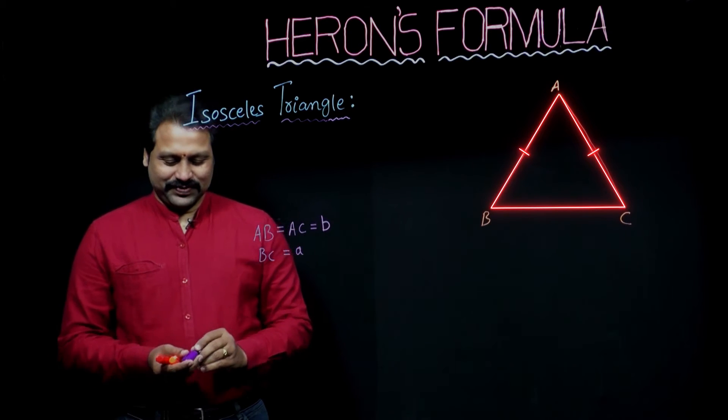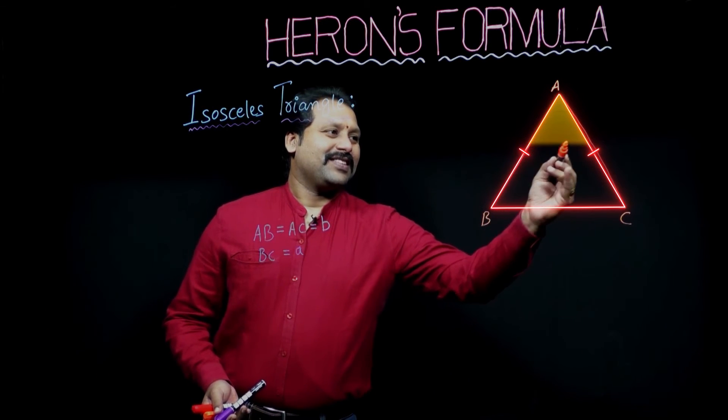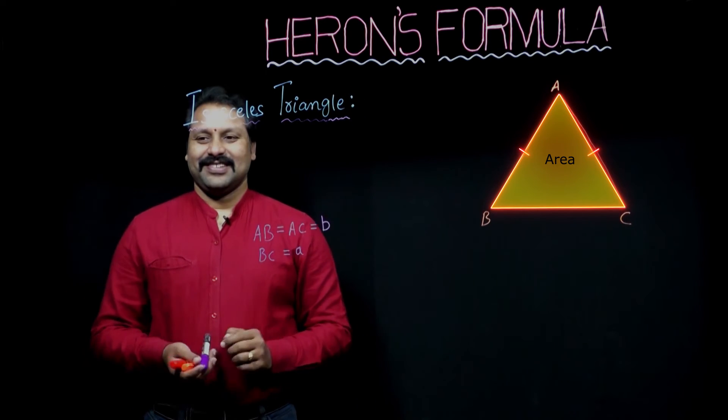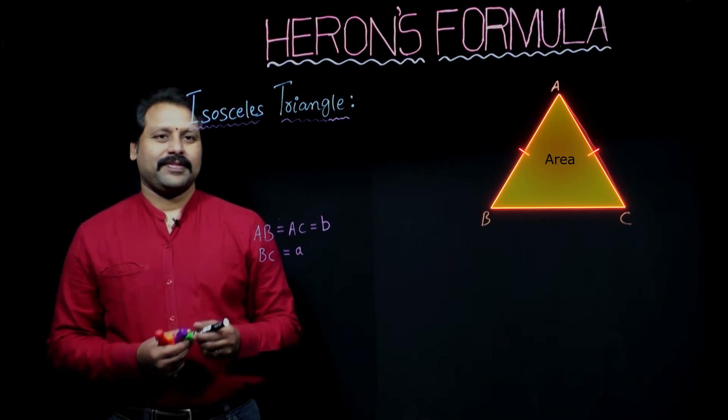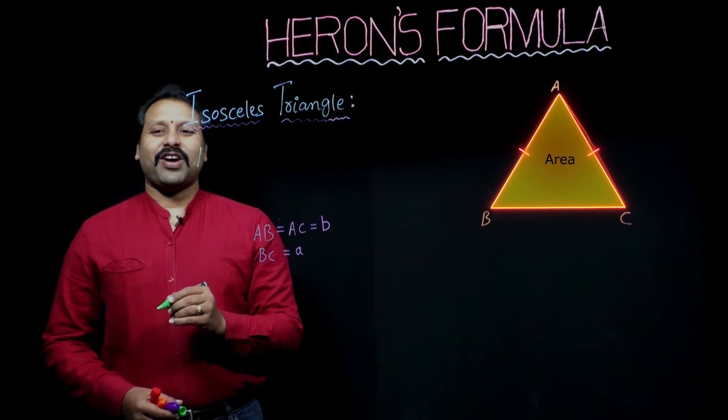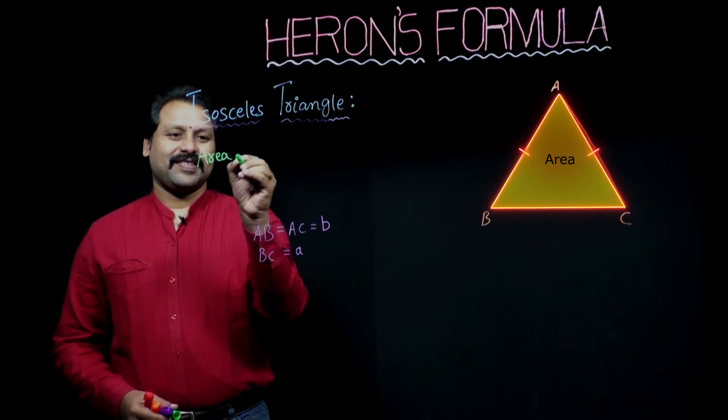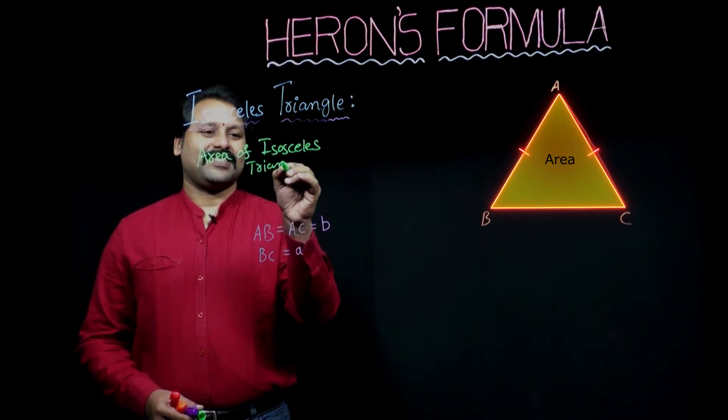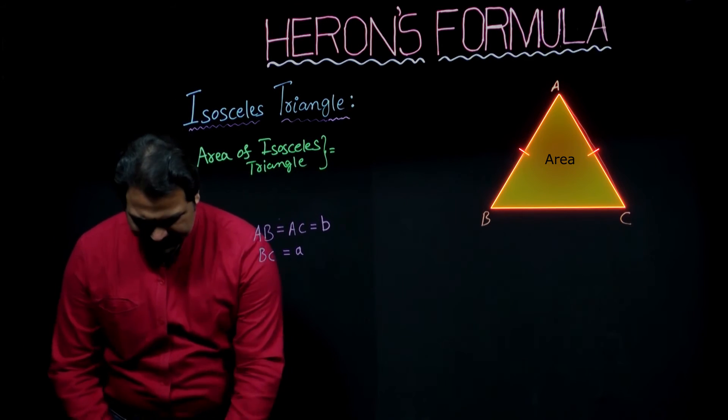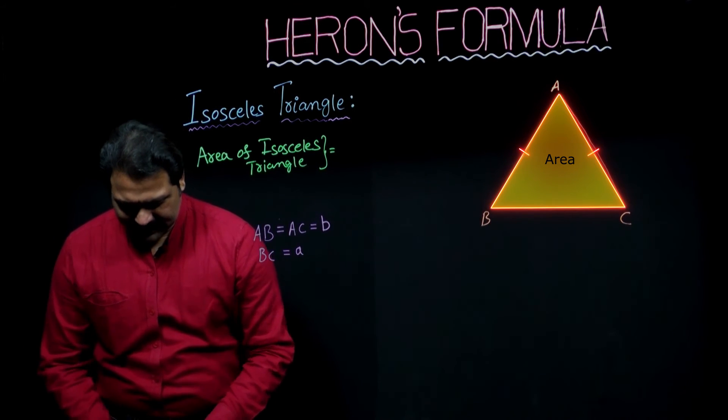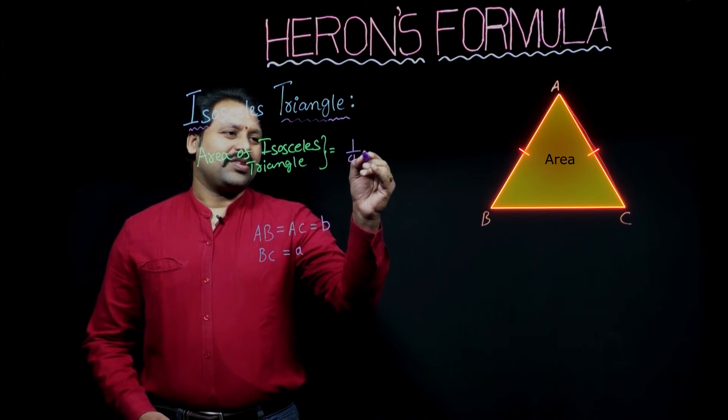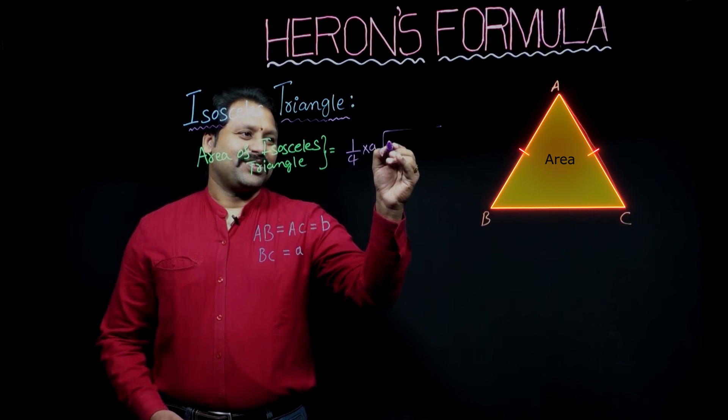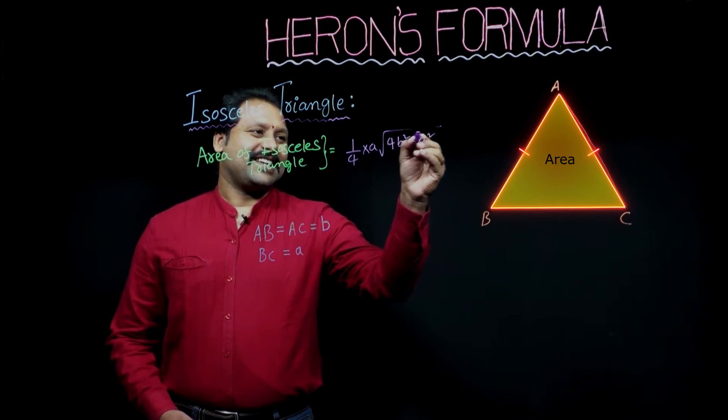Now, the shaded part is our required area. Area of isosceles triangle: 1 by 4 into A under root 4B square minus A square.